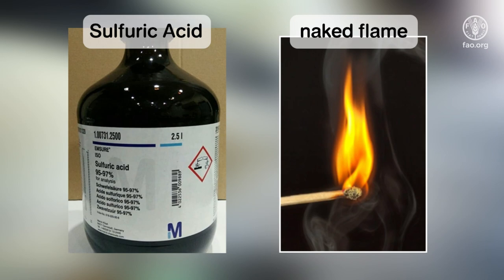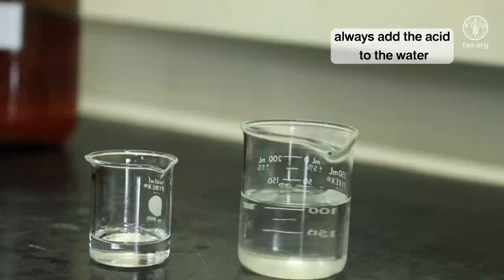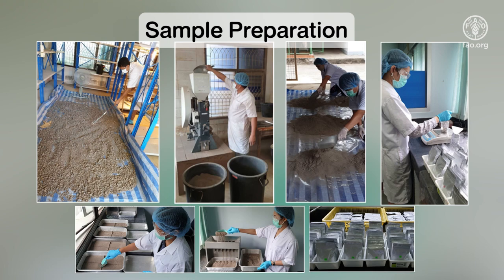Do not discharge the waste into the drain. Keep in mind, never dilute by pouring water into the acid. Always add the acid to the water. Samples should be air-dried and sieved to less than 2 mm size.